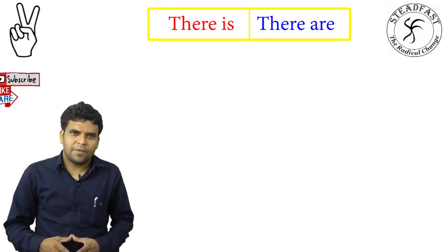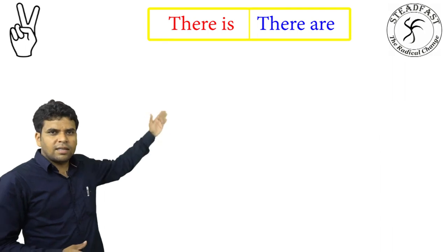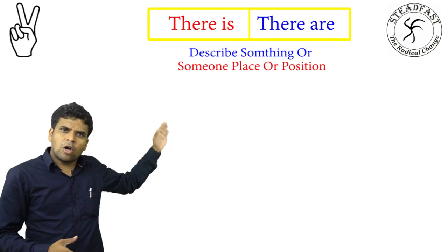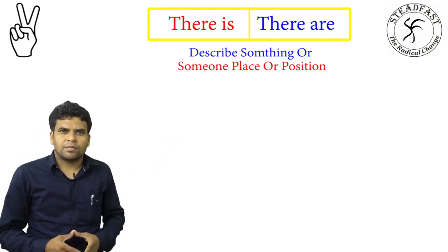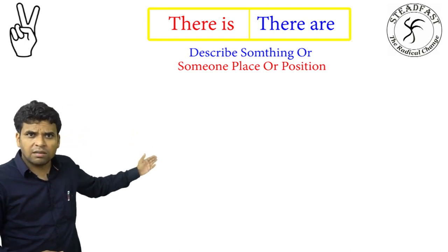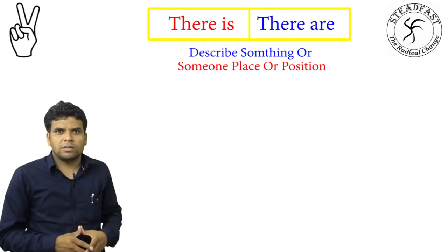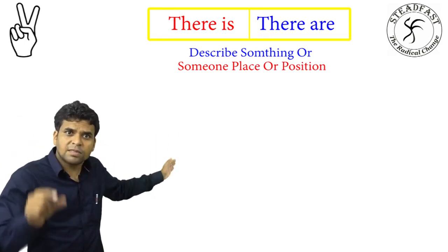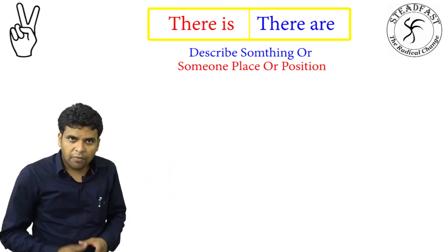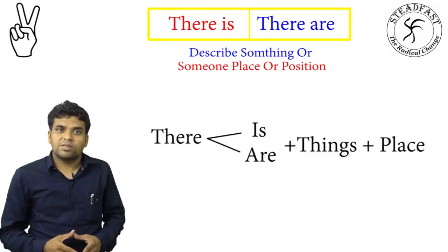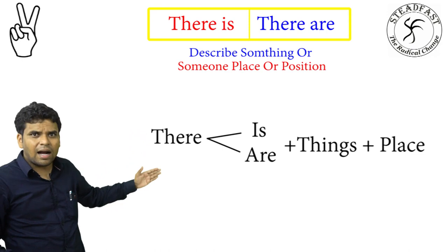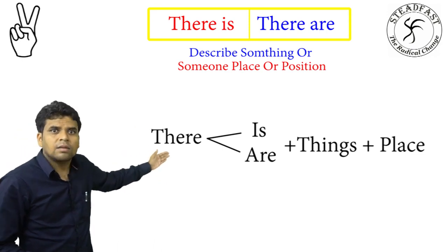Here you have to learn the use of 'there is' and 'there are'. We use them to describe something or someone — their place and position. The structure is: there is / there are + thing + place.